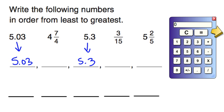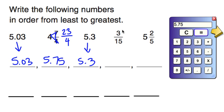Looking at the decimal numbers we already have, we'll bring those straight down. We still need to turn the two mixed numbers and the one fraction into decimals. Looking at 4 and 7 fourths, let's first turn this into an improper fraction using our triangle trick: 4 times 4 is 16, plus 7 is 23, so that's 23 fourths. 23 divided by 4 equals 5.75. For 3 fifteenths: 3 divided by 15 equals 0.2, or 0.20. And for 5 and 2 fifths: 5 times 5 is 25, plus 2 is 27, over 5. 27 divided by 5 gives us 5.4.